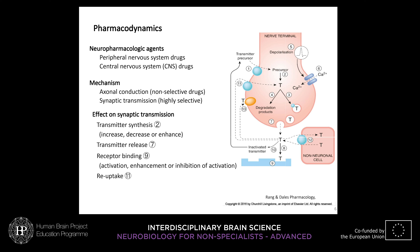Here you can see schematically represented different processes that can be modulated by drugs: the transmitter synthesis from precursor to transmitter, the release of the transmitter from the presynaptic neuron into the synapse, the receptor binding of the neurotransmitter at the postsynaptic membrane receptor, and the re-uptake of the neurotransmitter from the synapse.